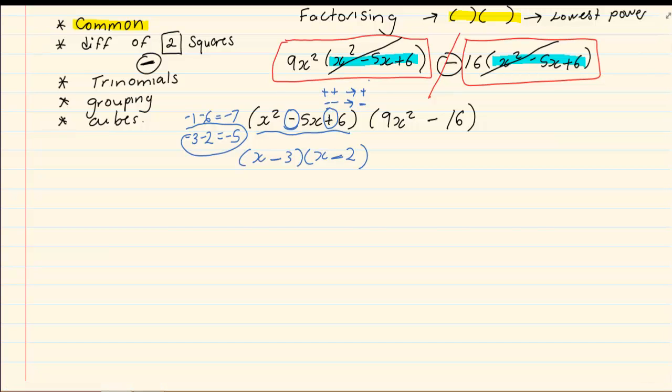Now, if you look at the second bracket, there is a difference of two squares. Difference of two squares is where we root the first term. So, I have got root of 9x squared. And we root the second term, 16.